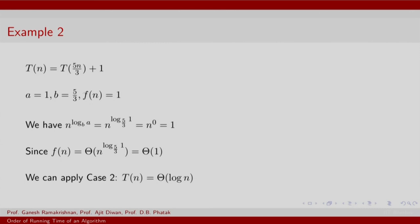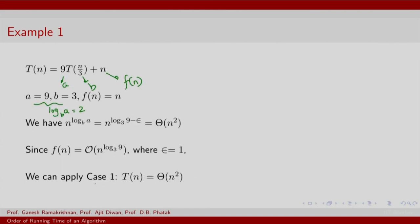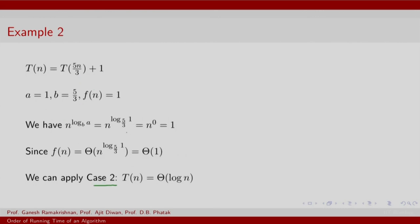A second example involves case 2. Here log_b(a) = log_{1/3}(1) — actually the parameters yield F(n) that is theta(1), which can be shown to be theta of constant 1. In this case, applying case 2, T(n) is theta(log n). Remember, we have the additional log n component, and n^(log_b(a)) turns out to be just theta(1).